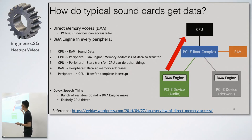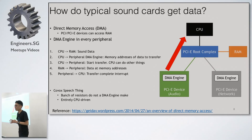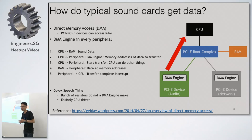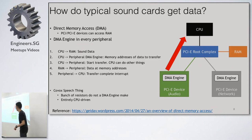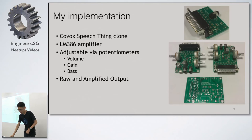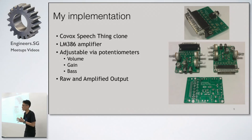The CPU is basically free while the memory-intensive processing is handled by the device. The problem with the Covox Speech Thing is that it's just a bunch of resistors — it has no DMA engine. So there's no choice: the CPU has to be involved in manually transferring all the data, micromanaging every transfer to the device.